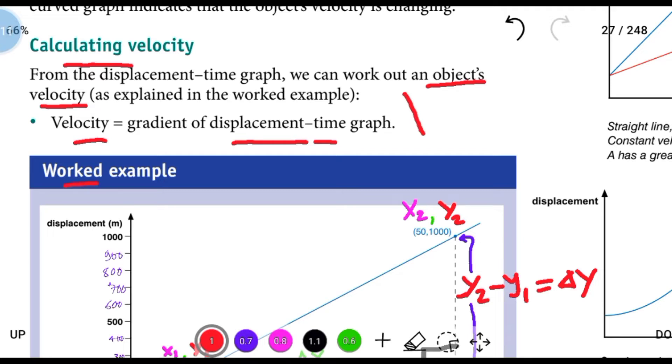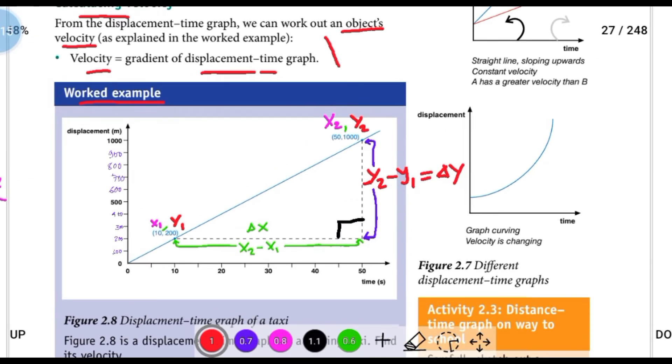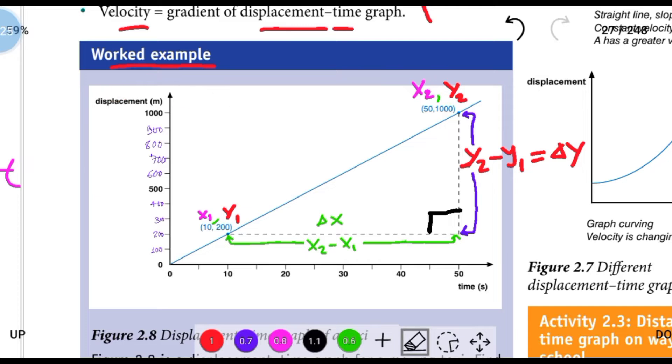Here's a worked example. The vertical axis shows displacement in meters, and the horizontal axis shows time in seconds.